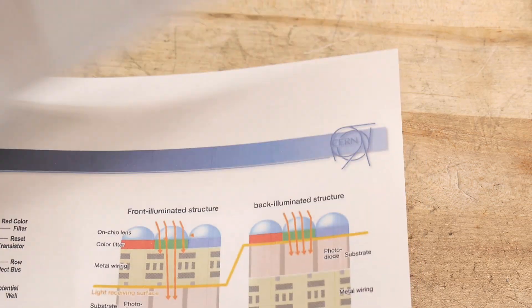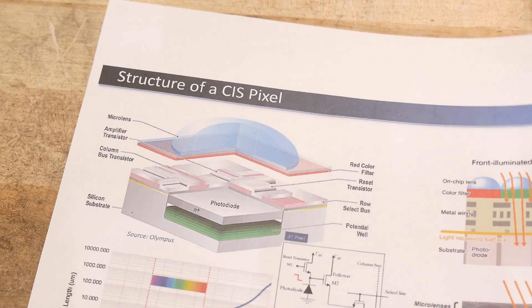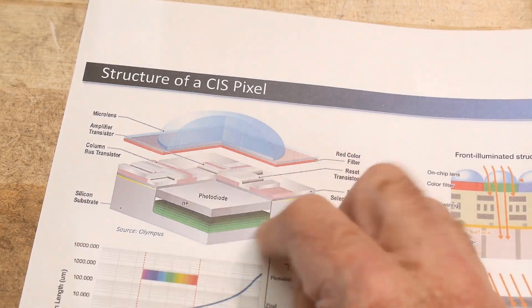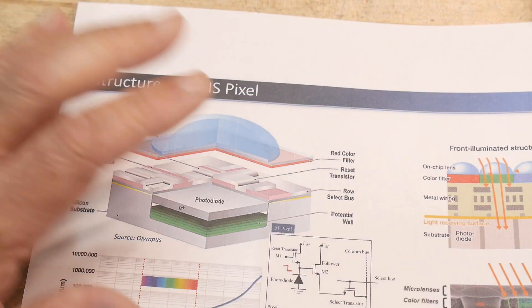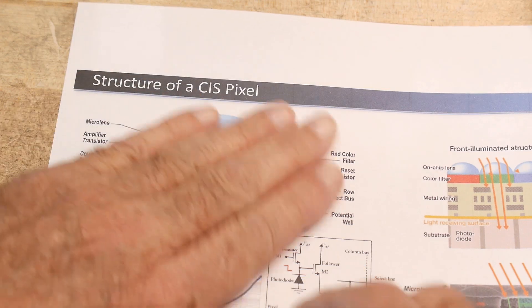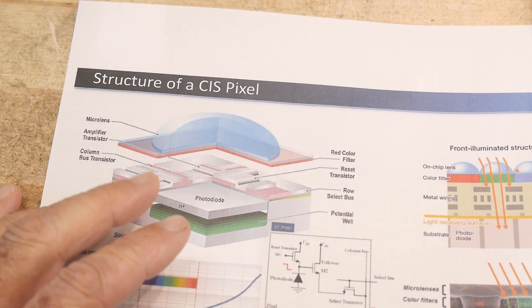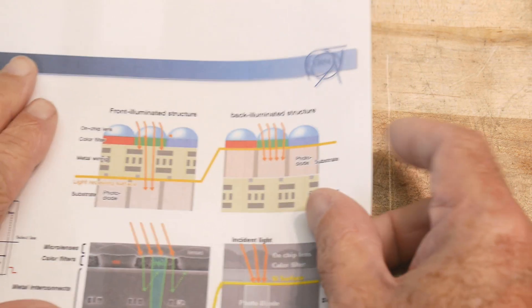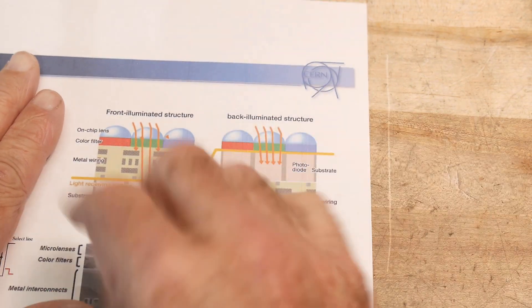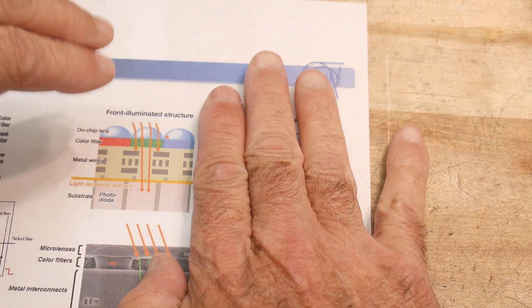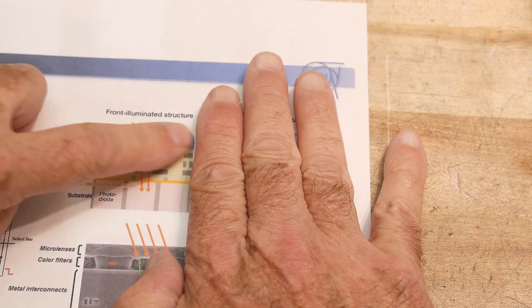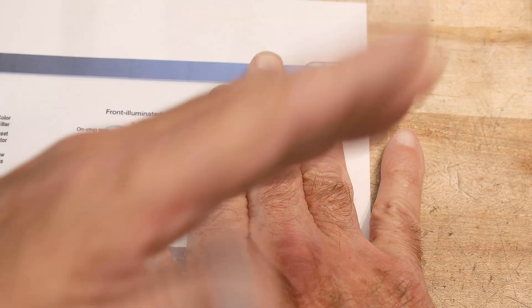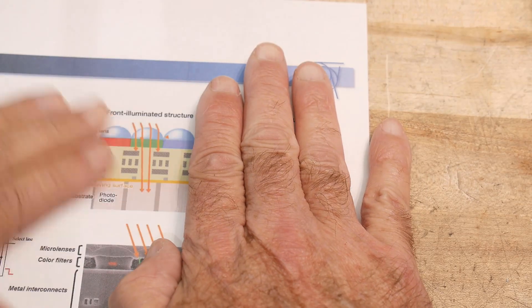You can imagine there is some structure, and the light comes into the structure and it does things. The pixels need to be right next to each other — pixel, pixel, pixel, pixel — a red one, a green one, and a blue one, and they just keep repeating. There are all of these pixels tiled together.